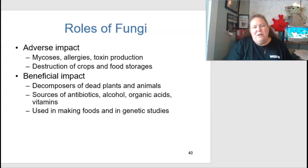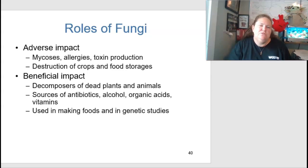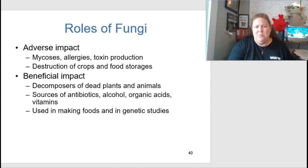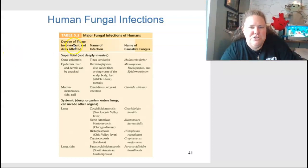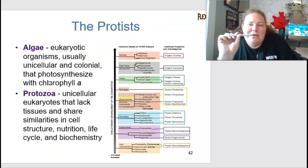Fungi have both beneficial and adverse impacts. Adverse impacts include mycoses, allergies, toxic production, and destruction of crops and food storage — for example, corn molds here in Michigan. Beneficial impacts include decomposition of dead plants and animals, production of antibiotics, alcohol, organic acids, vitamins, and use in making foods and genetic studies because they are easily manipulated. A table in your book lists major fungal infections of humans by tissue degree, infection name, and causative fungus.